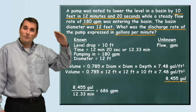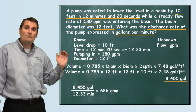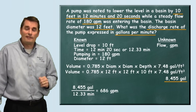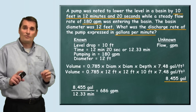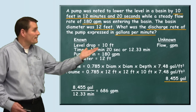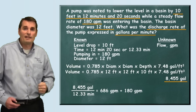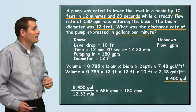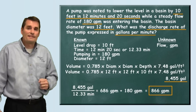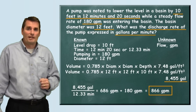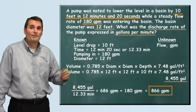Remember, the level was dropping at that rate while 180 gallons per minute were still coming in. So the pump's discharge rate has to be 686 gallons per minute plus the 180 gallons per minute that was coming in, for a total of 866 gallons per minute. And that is how this problem is solved.